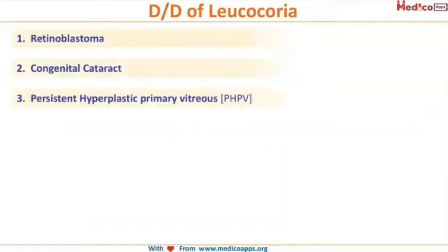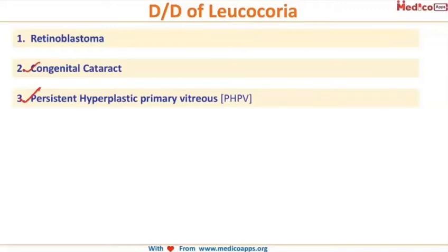A few important exam questions: the differential diagnosis of leukochoria. Leukochoria does not always indicate retinoblastoma — it can also occur due to a congenital cataract or a persistent hyperplastic primary vitreous (PHPV), which is very difficult to differentiate from retinoblastoma.